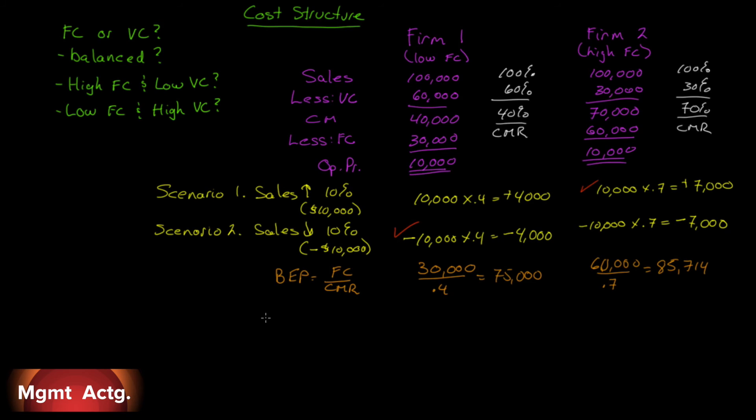Margin of safety, remember, that's just our sales minus our break-even point. To calculate margin of safety, we first need our break-even point in dollars. So our sales are $100,000 minus our $75,000 break-even. It gives us a $25,000 margin of safety for Firm 1. For Firm 2, it's the same $100,000 minus $85,714, which gives a margin of safety of $14,286, a much lower margin of safety.